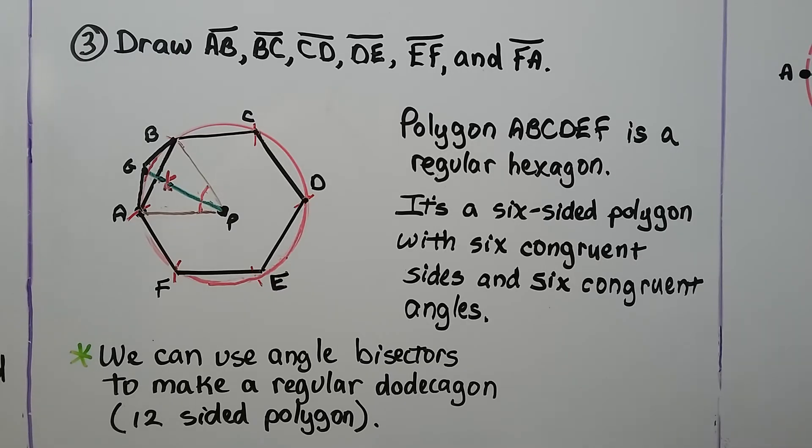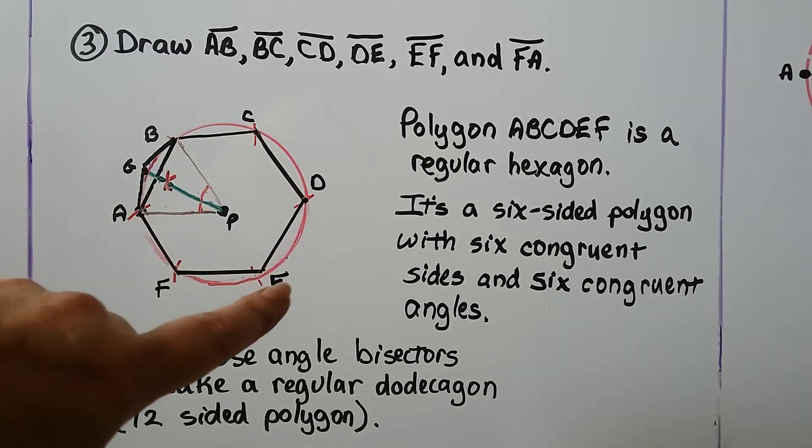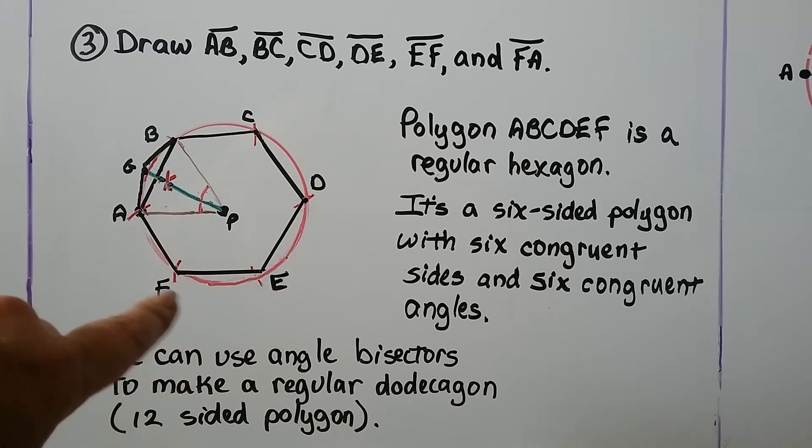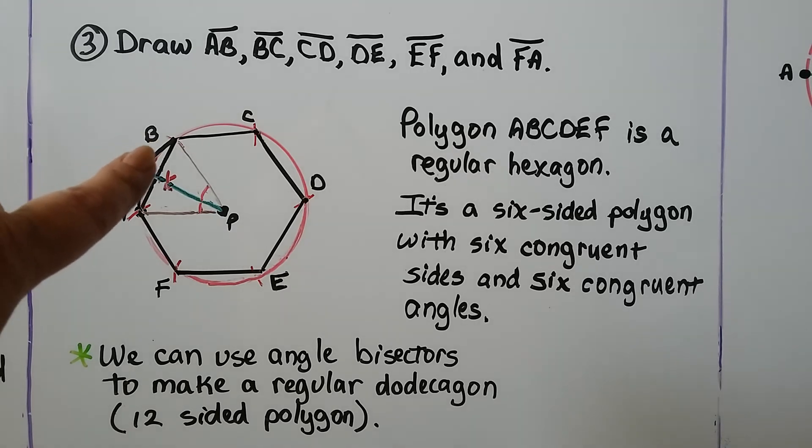Now all we have to do is draw AB, BC, CD, DE, EF, and FA. We've got polygon ABCDEF that's a regular hexagon.